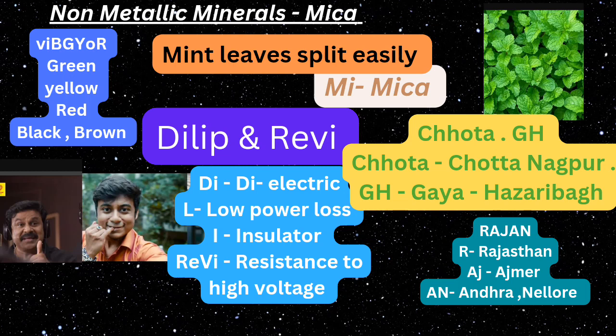The second mnemonic is 'Vibziyar,' which represents the colors of the rainbow. Mica can be black (B), brown (B), green (G), yellow (Y), and red (R). So Vibziyar helps you remember the various colors mica can appear in.